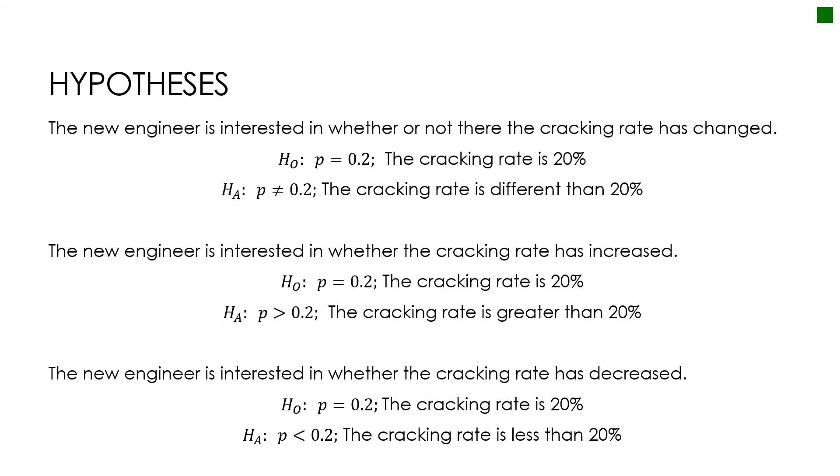This just sort of spells out for us when we would use which one. If the question said the new engineer is interested in whether or not the cracking rate has changed, that implies we're just looking for a difference, whether it's significantly more than or significantly less than 20%. Notice the null hypothesis is that p is equal to 20%, and the cracking rate is 20%. Then my alternative would be based on the fact that we're just worried about whether or not it changed. The cracking rate is different than 20%. This would be that two-tailed test.